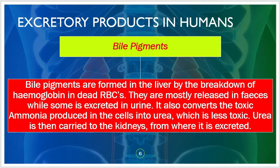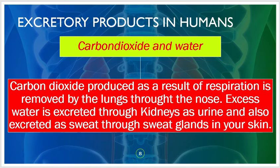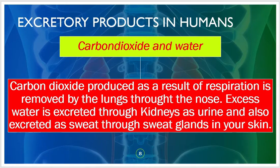Excess water-soluble vitamins are also excreted along with the urine. Carbon dioxide, produced as a result of respiration — the process of inhaling oxygen and exhaling carbon dioxide — is removed by the lungs through the nose. Excess water is excreted through the kidneys as urine and also as sweat through the sweat glands in the skin.